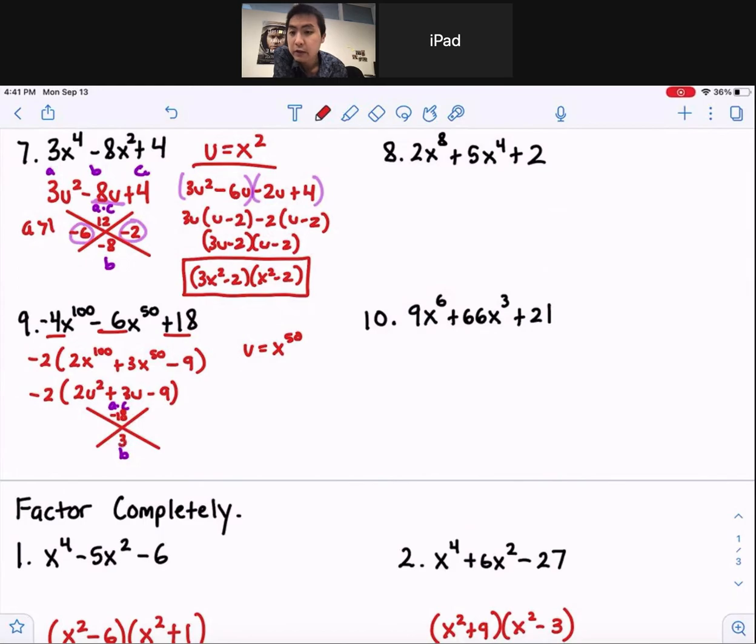So we got negative 18 on top, 3 on the bottom. The two numbers that multiply to the top, add to give you the bottom. That's positive 6 and negative 3. A is certainly greater than 1, so we got to do this by factoring.